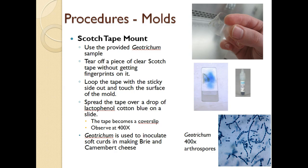You'll also be doing a scotch tape preparation using a provided specimen of Geotrichum. Geotrichum is used to inoculate the soft curds when making brie and camembert cheeses, producing enzymes that cause those cheeses to get runny inside their white rind — the white rind itself comes from another mold called Penicillium candidum. To do the scotch tape preparation, tear off a piece of clear scotch tape with no fingerprints, loop it sticky-side out, and touch it to the surface of the mold on the petri dish. Put a drop of lacto-phenol cotton blue on the slide and spread the tape over it — the tape becomes your cover slip. Observing at 400X, you'll see the arthrospores of Geotrichum.